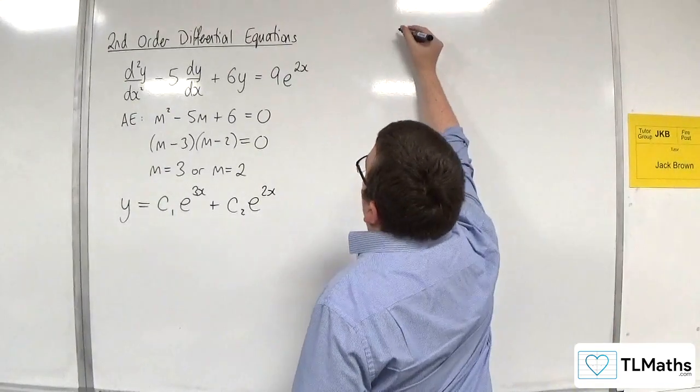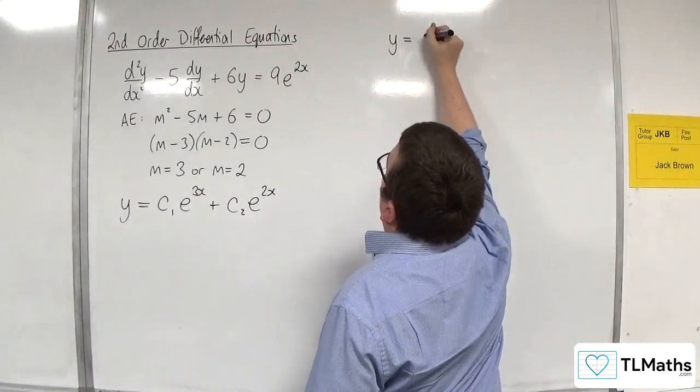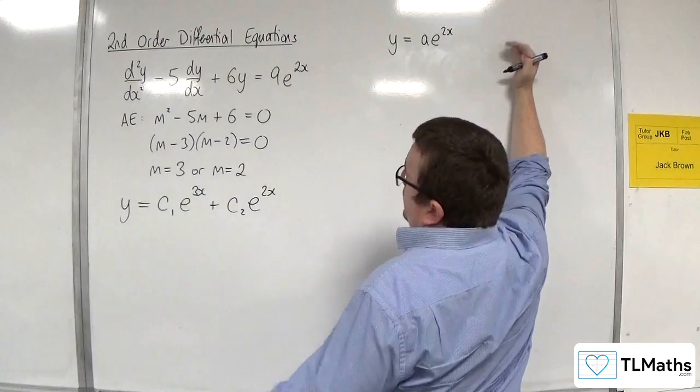You might instinctively say, right, my test function's got to be ae to the 2x, following the logic of how we've gone through this before.